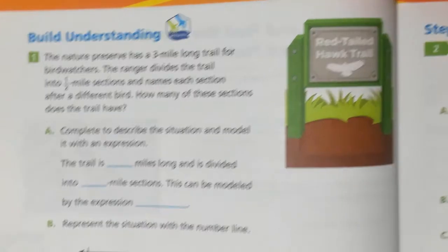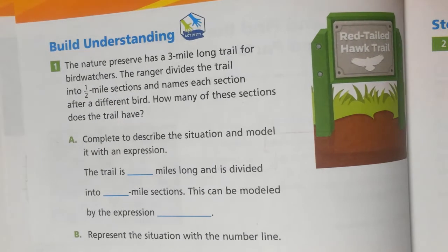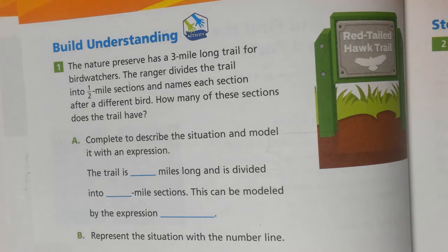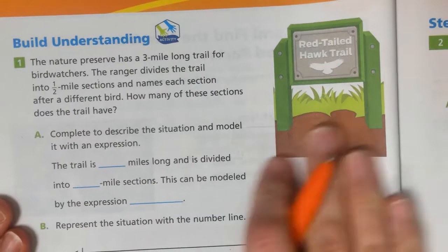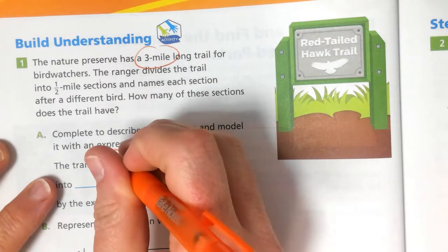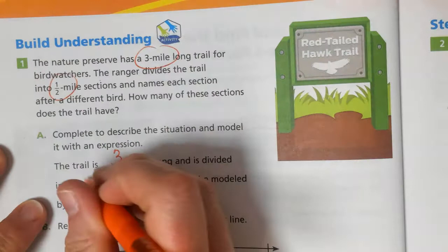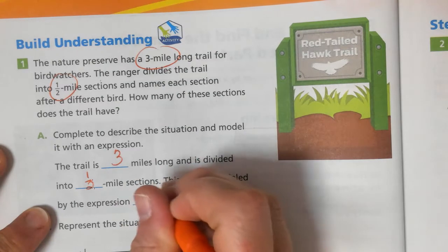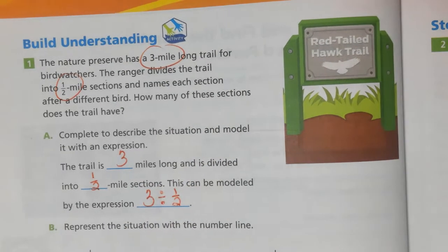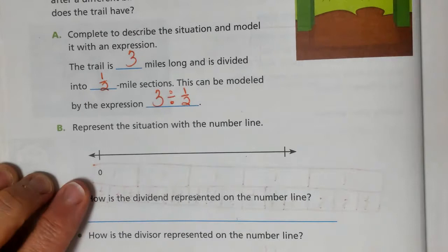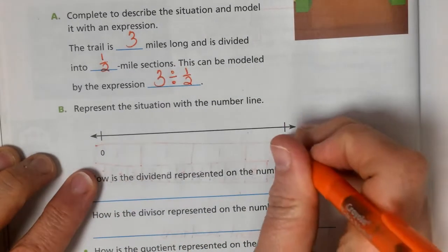Let's practice this out. The nature preserve has a 3-mile long trail for bird watchers. The ranger divides the trail into 1/2 mile sections and names each section after a different bird. How many of these sections does the trail have? The trail is 3 miles long and is divided into 1/2 mile sections. So this can be modeled by 3 divided by 1/2. We're dividing the 3 miles, each of them in half. If we want to represent the situation with a number line, we know we have a total of 3 miles.